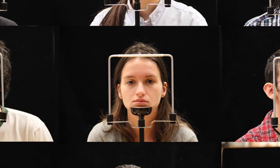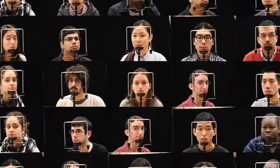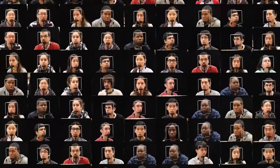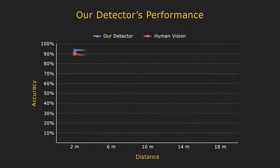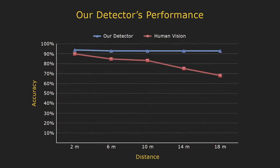To train our detector, we created a gaze dataset of 56 people and nearly 6,000 images. Our detector is over 92% accurate at long distances, significantly outperforming eye contact detection in people.